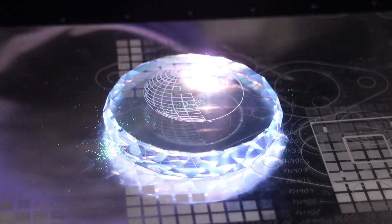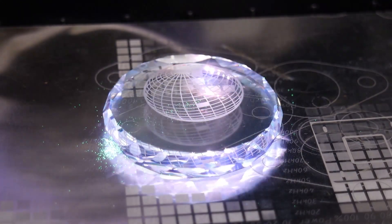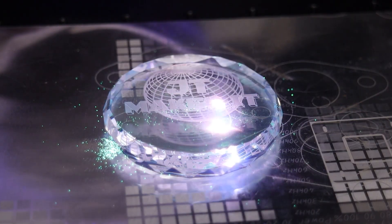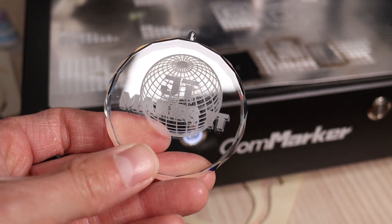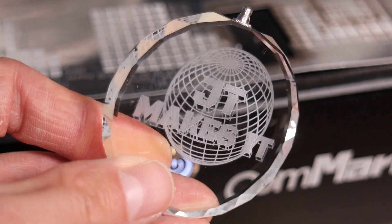Once positioned, I started the engraving. The higher power of the 10 watt laser made the process significantly faster and more reliable than with the 5 watt version. The result was flawless. UV laser like the CommMarker Omni is the best tool for making incredibly precise engravings on glass.